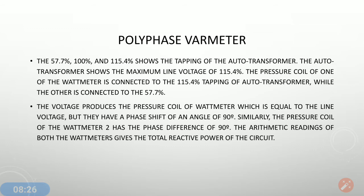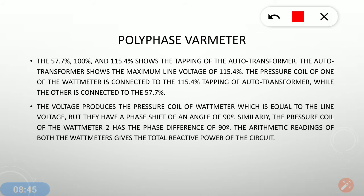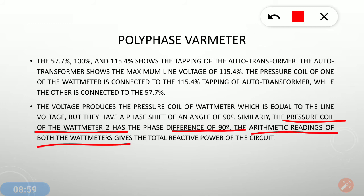The voltage across the pressure coil of each wattmeter is equal to the line voltage, but they have a phase shift of 90 degrees. Similarly, the pressure coil of wattmeter 2 also has a phase difference of 90 degrees. When we calculate the arithmetic sum of both wattmeter readings, the total reactive power of the circuit comes out.